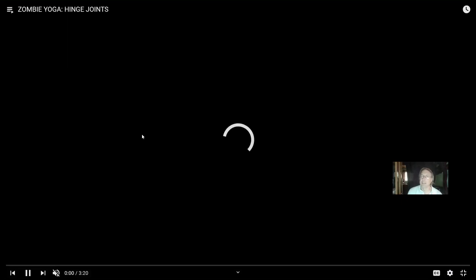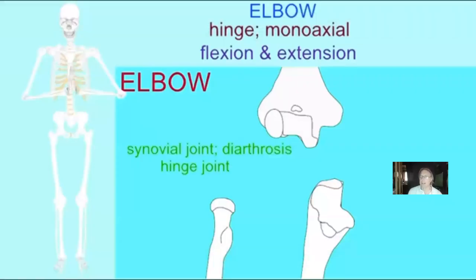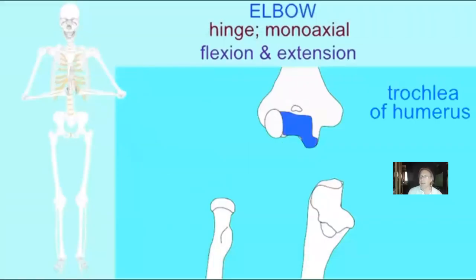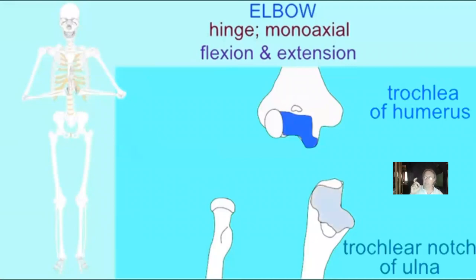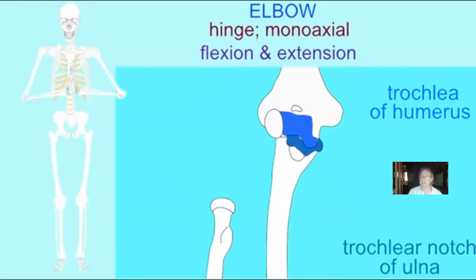One of the major classes of joints in the body is a monoaxial joint called a hinge joint. As we've seen, the elbow, the knee, the joints between the phalanges — these would be examples of hinge joints, which allow flexion and extension.